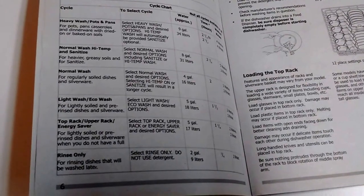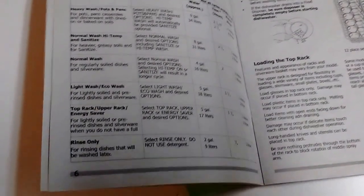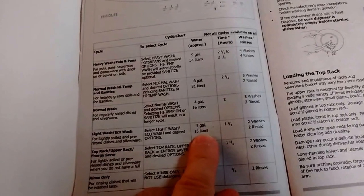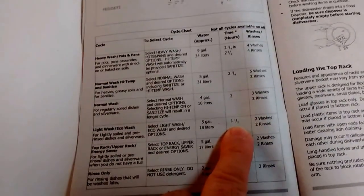One of the best is the light wash mode, which uses only five gallons of water and runs for about one and a half hours.